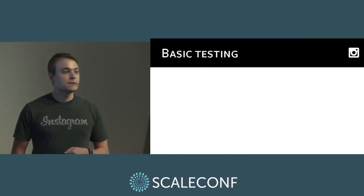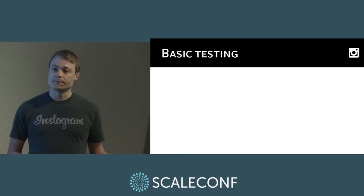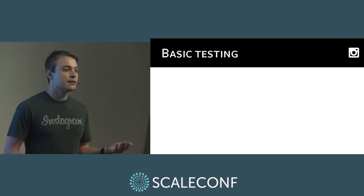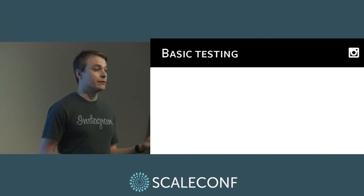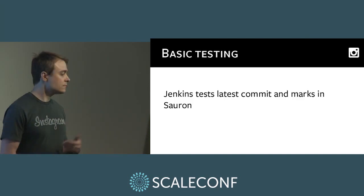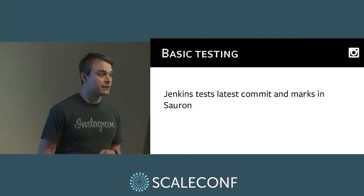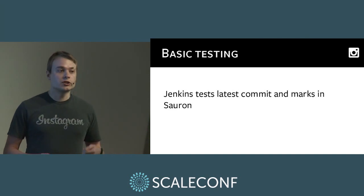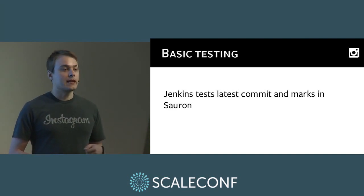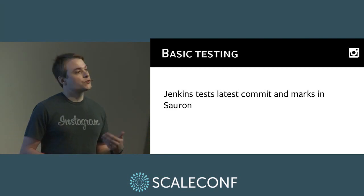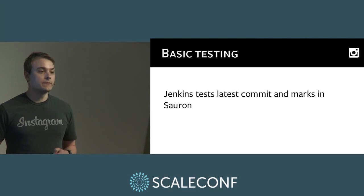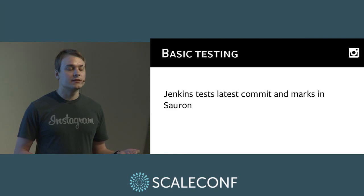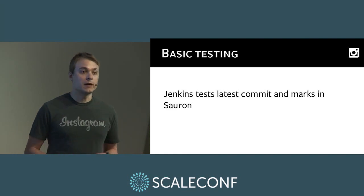We already had a test suite, but it was only run by engineers on their development machines — so when someone put up a diff, you had to take their word that they'd run the tests and everything was passing. We didn't necessarily know that every revision we were deploying had a clean test run. So we got Jenkins to run tests on master commits. Jenkins is a continuous integration system; we had it watch the master branch as commits came in, test those commits, and report to Soron. At this stage, Soron only tracked the latest commit which had passed tests, so when doing a rollout it would suggest you deploy that latest tested commit.